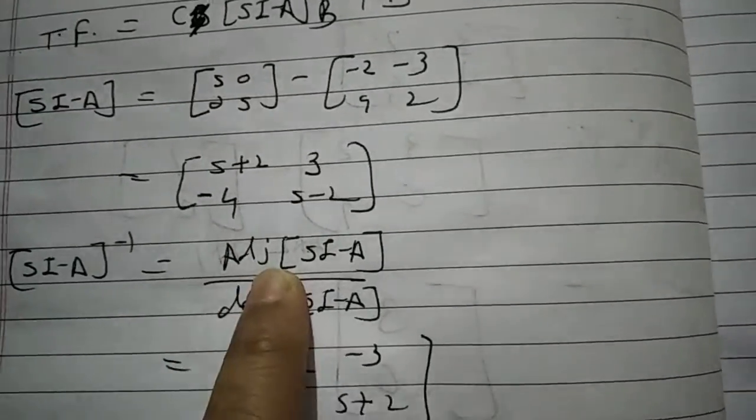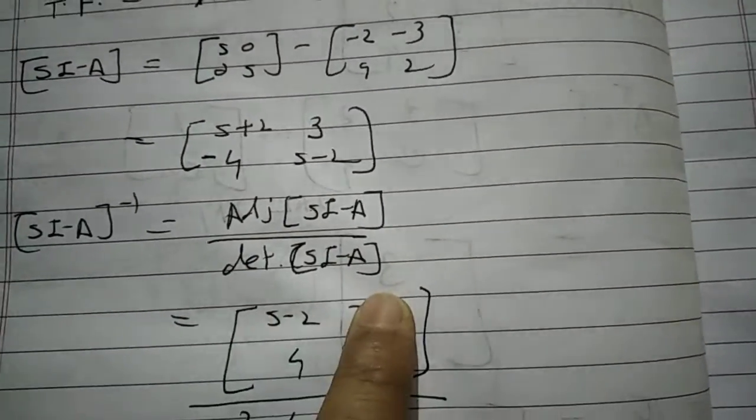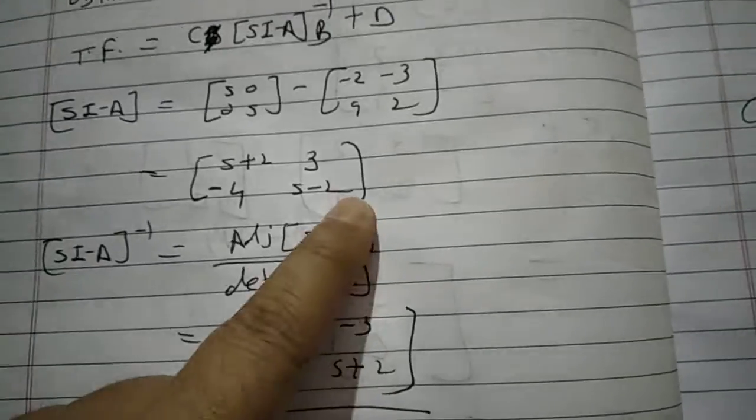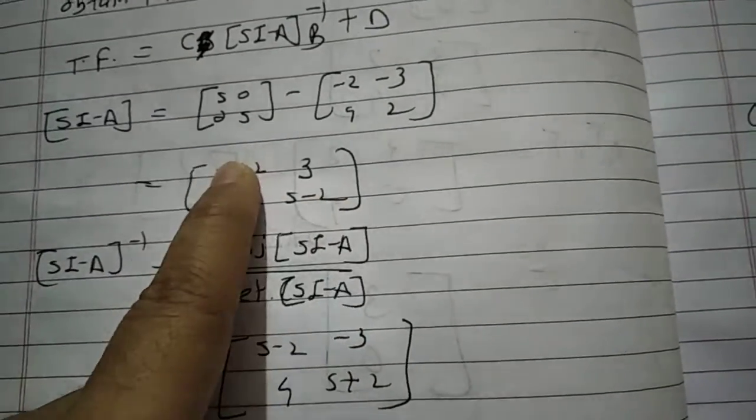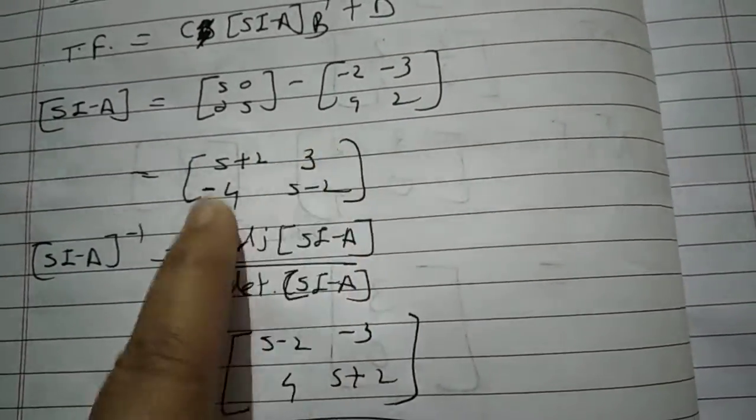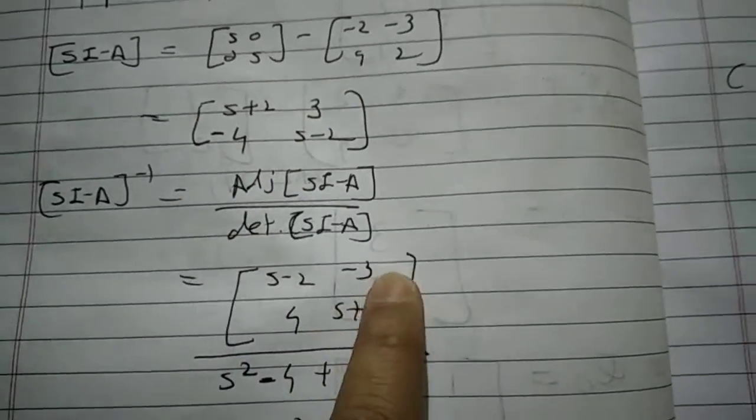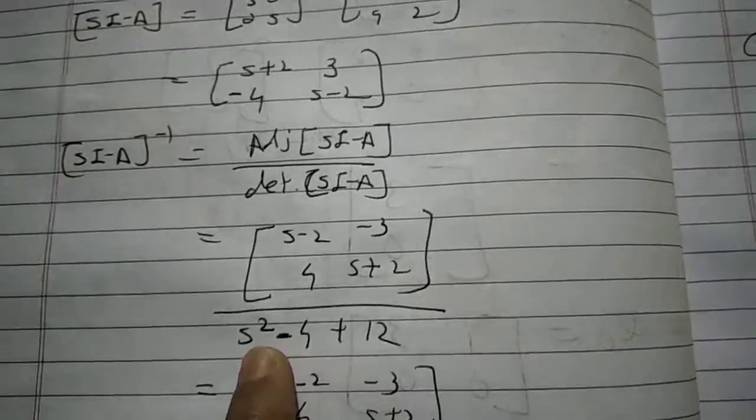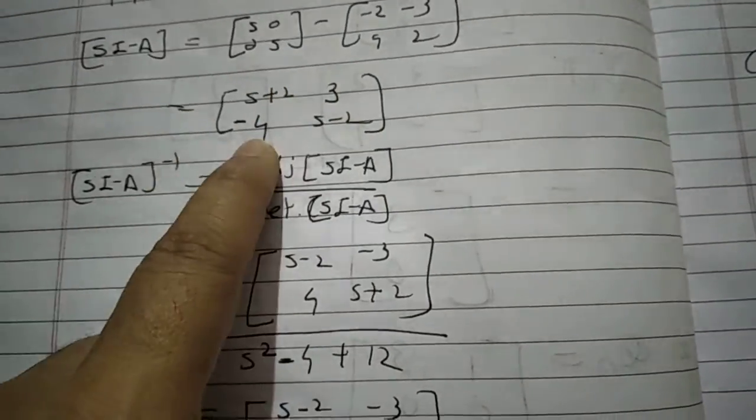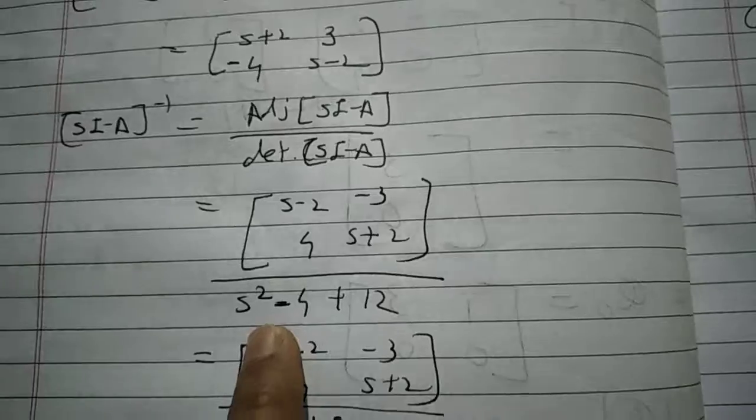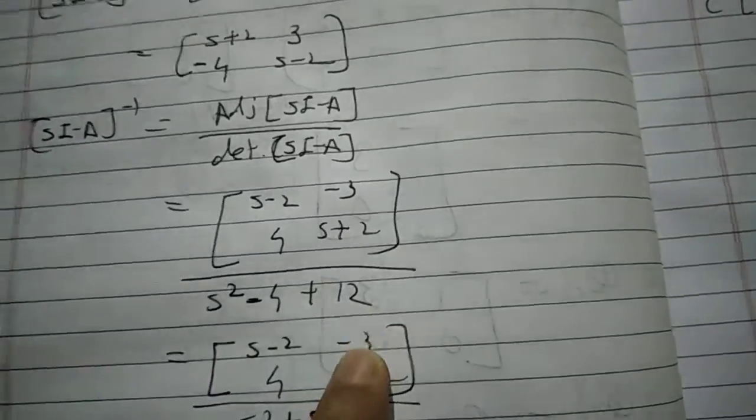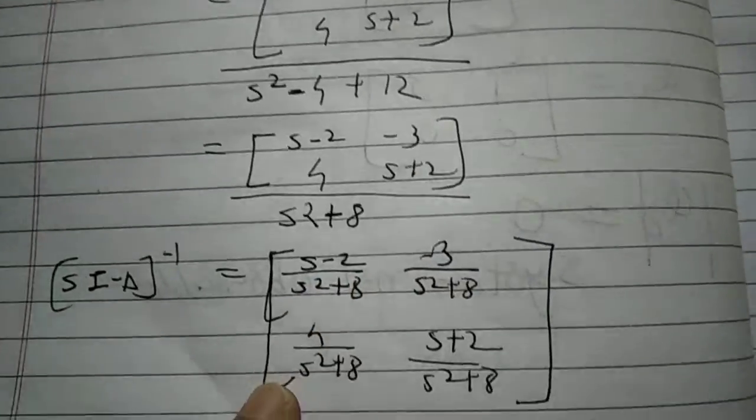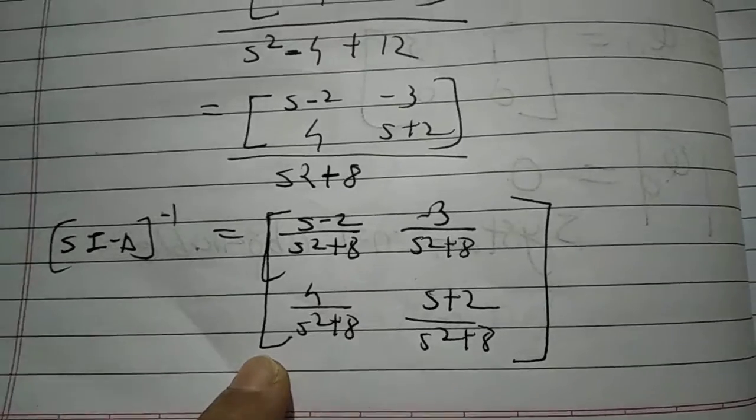To obtain SI minus A inverse we need adjoint of SI minus A and determinant of SI minus A. To obtain adjoint, take this to upward and take this to downward and change the signs of these elements. So minus 3, 4, and S minus 2 here and S plus 2. After that, determinant is this into this minus this into this. So you get S squared minus 4 plus 12. After solving you get this inverse.